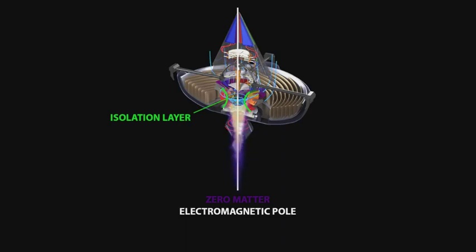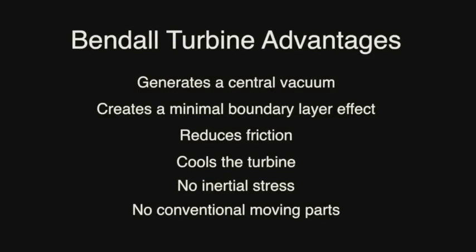A conventional jet turbine blade has a high-pressure boundary layer that generates friction and therefore heat, whereas the Bendel turbine fire tornado creates a central vacuum, which expands out beyond the turbine blades and has the effect of causing the air in front of the Bendel turbine to be sucked into the central vacuum. The vacuum creates a minimal boundary layer effect, reducing friction and cools the turbine.